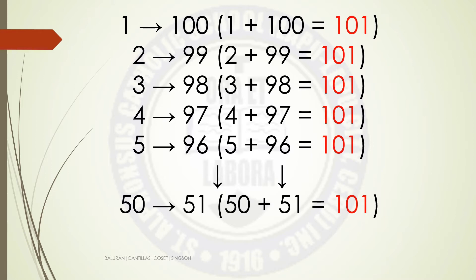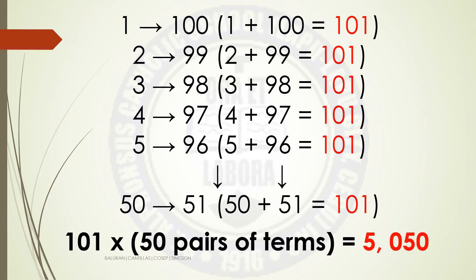He discovered that when he added 2 numbers, the result is always the same. Therefore, he multiplied 101 times 50 pairs of terms. That's why it becomes 5050.